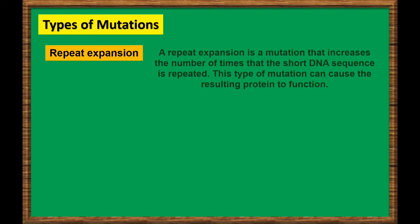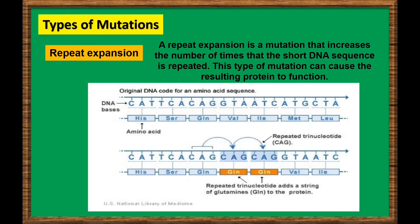And the last type of mutation is repeat expansion. A repeat expansion is a mutation that increases the number of times that a short DNA sequence is repeated. This type of mutation can cause the resulting protein to malfunction. For example, the codon CAG is repeated, thus giving a repeated amino acid of glutamine.